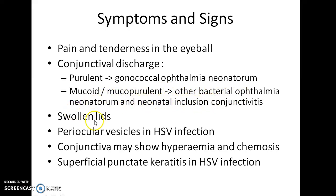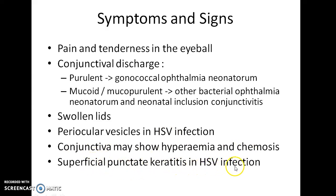Swollen lids can be seen. Periocular vesicles can be seen in case of HSV Ophthalmia Neonatorum. The conjunctiva may show hyperemia and chemosis. Superficial punctate keratitis can be seen in herpes simplex Ophthalmia Neonatorum.